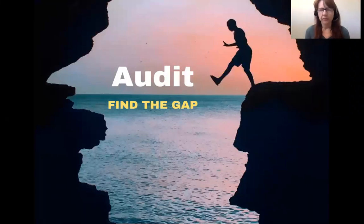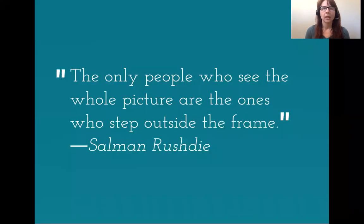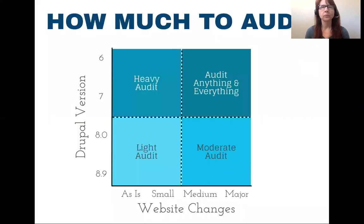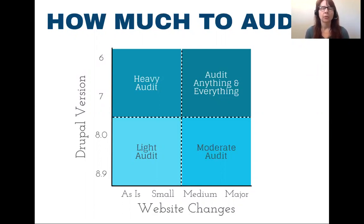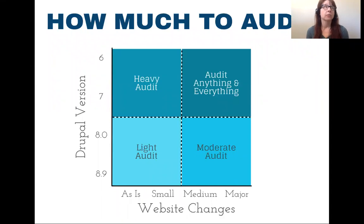After you've done some research and convinced yourself you're going with Drupal 9, I recommend auditing your existing site — it's always good to step back, take a look, and get the big picture. How much you need to audit really depends on what you plan to do with your new website. If you're on Drupal 8.8 or 8.9 and want to go to Drupal 9, it's super simple — you just need to check you don't have any deprecated code. If you're on Drupal 6 or 7 and want to do a big redesign, I recommend you audit as much as you can.